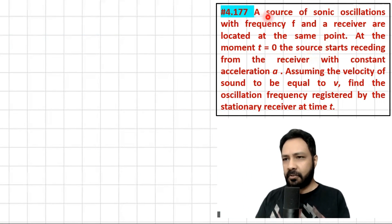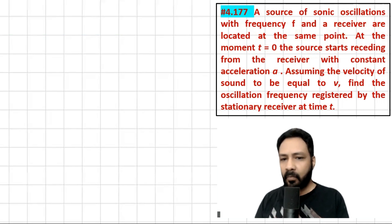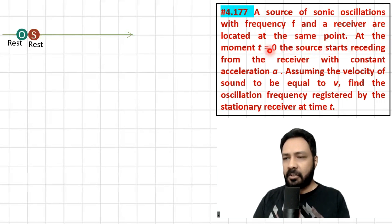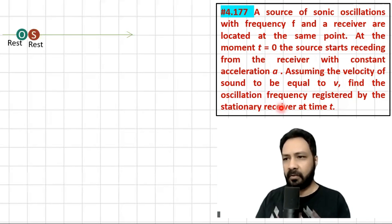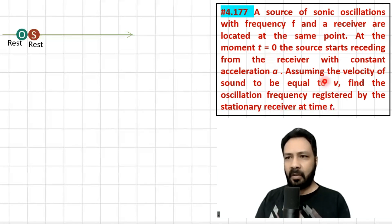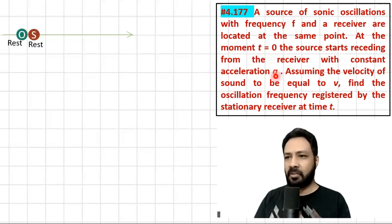Here's the question: a source of sonic oscillation with frequency f and the receiver are located at the same point. At t = 0, the source starts receding from the receiver with a constant acceleration a. Assuming the velocity of sound to be equal to v, find the oscillation frequency registered by the stationary receiver at time t. I have changed the notation from Irodov — frequency is written as f and acceleration as a instead of w.